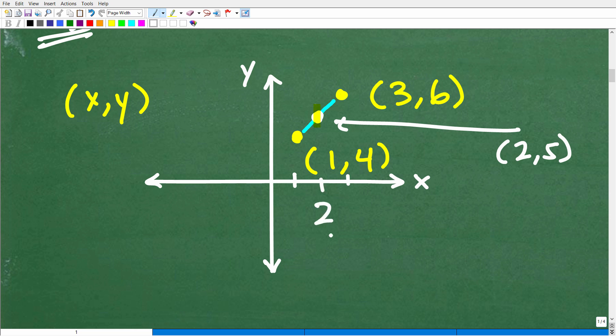2 is right in the middle. That definitely makes sense. And then if this is 4 and here is 6, well, this would be 5. So the 2, 5 certainly seems to be the midpoint between these two points, 1, 4 and 3, 6.